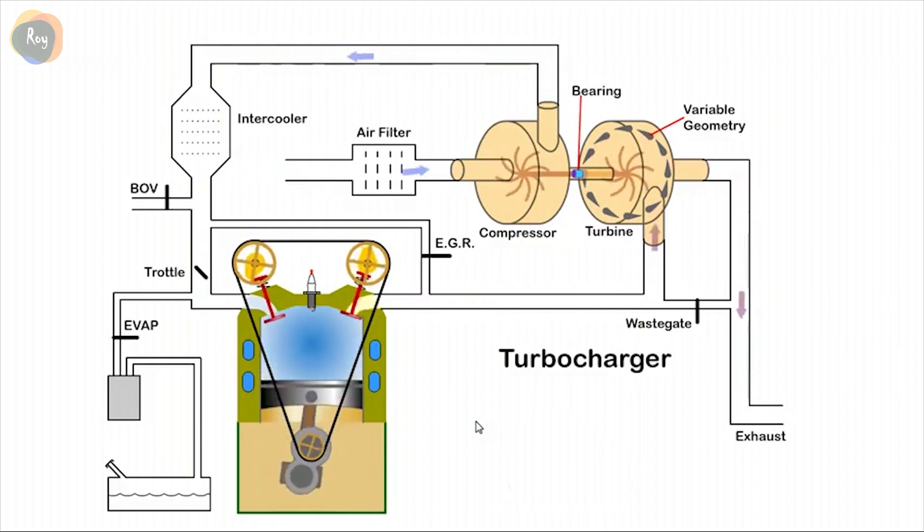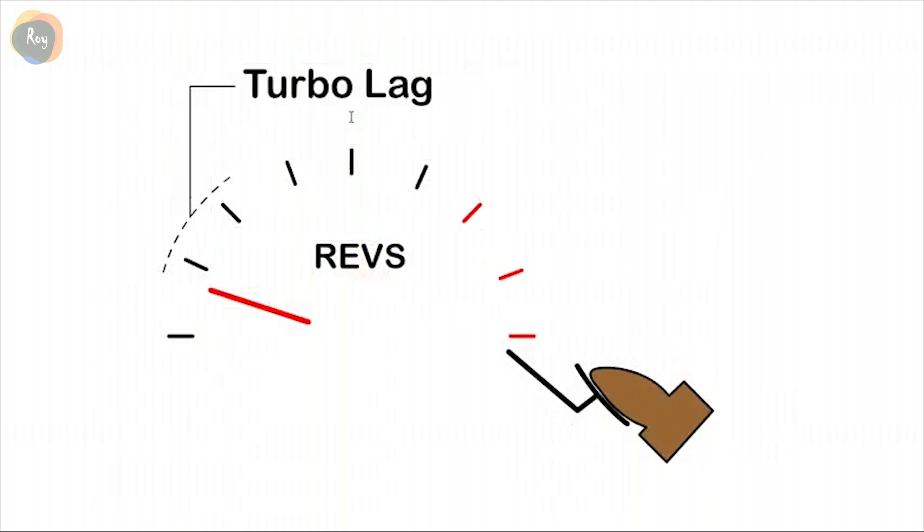A common problem with turbos is turbo lag. When the engine is accelerating, there is an increase in airflow through the engine and thus through the turbo. However, it takes time for the turbo to spool up to speed and develop the required boost pressure. This time delay or turbo lag is noticed when accelerating. At mid-range, we get a surge in power as the turbo develops boost pressure. A variable geometric turbo helps reduce turbo lag.